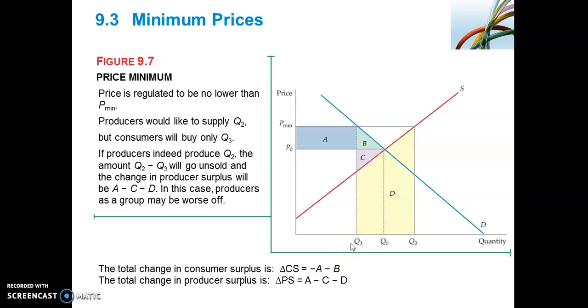But what if the producer was not aware that the consumers would only purchase Q3? What if they were not aware of that and only responded by how much they would like to supply at this particular minimum price? And at this particular minimum price, they would want to supply Q2. This would result in an excess supply that is unsold between this region Q3 and Q2. So this shaded area D represents that excess supply that is unsold.